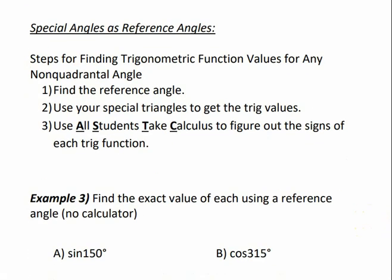The steps for finding trigonometric function values for any non-quadrantal angle are: first, find the reference angle; then use your special angles and the hand trick to get the trig values; and apply the all-students-take-calculus rule to determine the correct sign of each trig function.